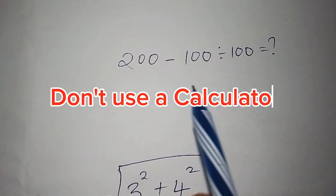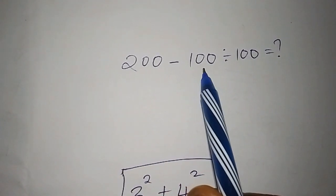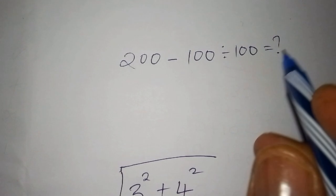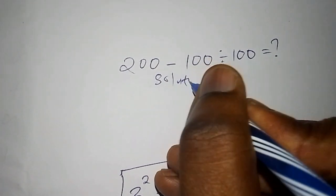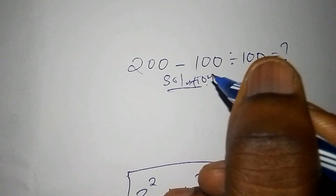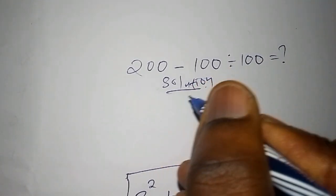Hello, welcome. Let's solve this: 200 - 100 ÷ 100. So the first thing we're going to begin with is the solution. How do we solve this? Let's start.